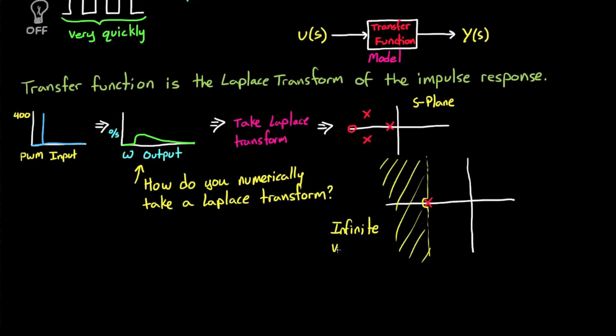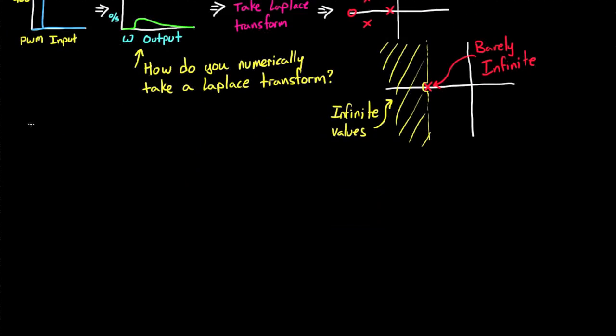And other places in the S-plane can sum to infinity. So if you're numerically trying to take the Laplace transform, how can you tell the difference between barely infinite and completely infinite, especially with a finite set of operations? I don't know. But if you guys know, please leave a comment below and point me to the direction where I can find out, because I'd like to know. But that doesn't mean that this method we're using is useless.